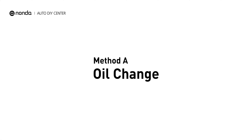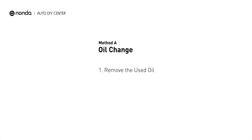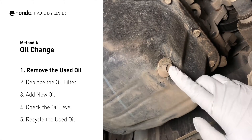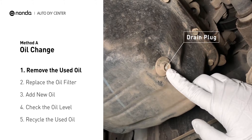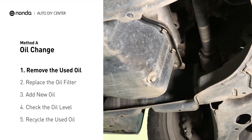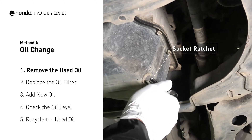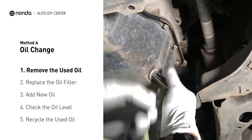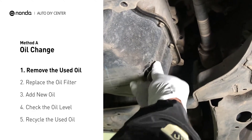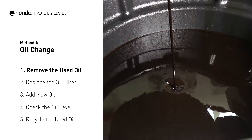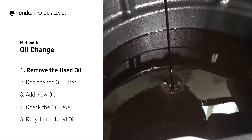Method A: Oil Change. Locate the oil drain plug on your vehicle and place an oil collection pan underneath it. Use a socket ratchet to remove the plug from the oil pan on your vehicle. Once the plug is removed, the oil should start flowing out into your collection pan.